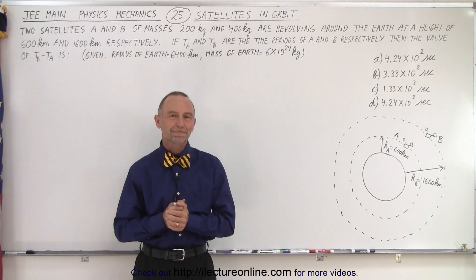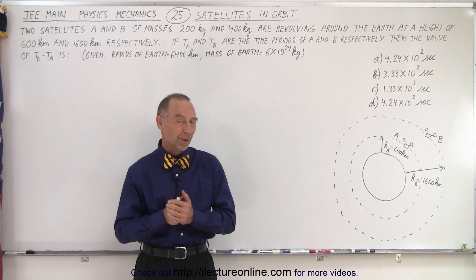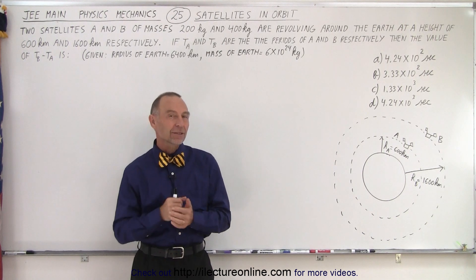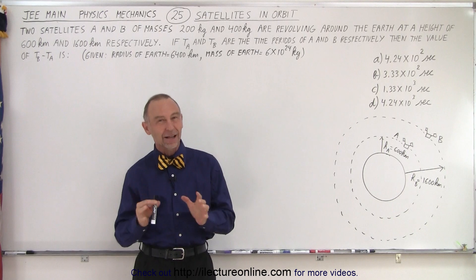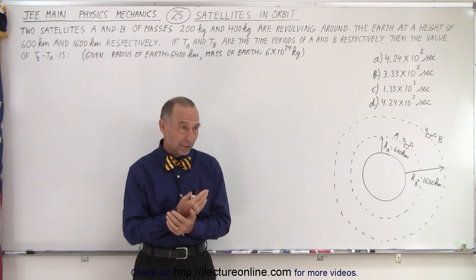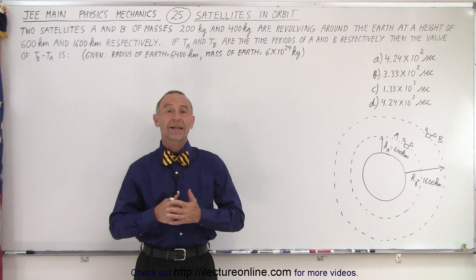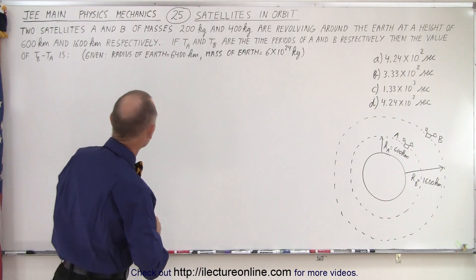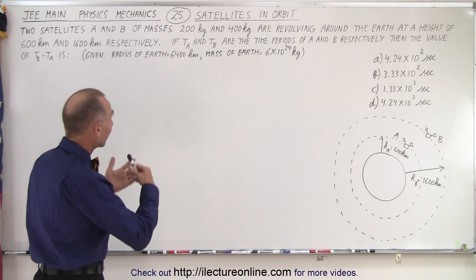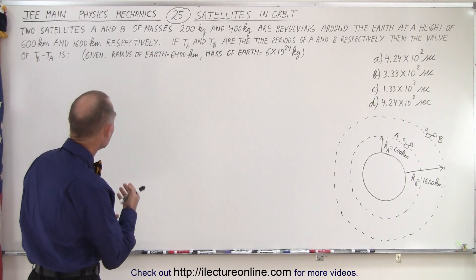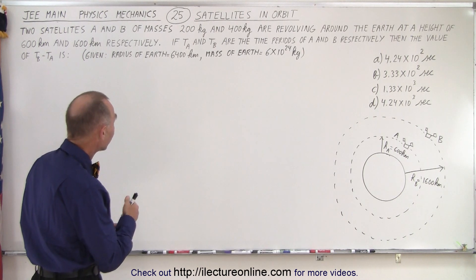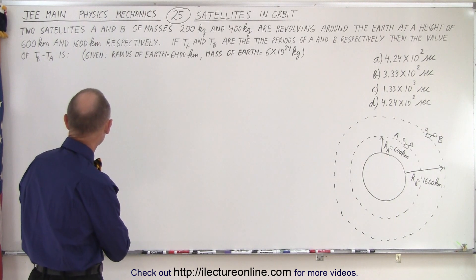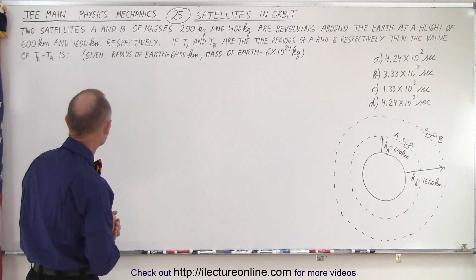Welcome to our lecture online. Here we have another interesting problem from the JEE main physics test, and this one in particular — remember they're not allowed to use calculators — and I'm looking at this problem wondering how you do this without a calculator. Well, we'll figure it out. Let's read the problem first. We're dealing with satellites in orbit: two satellites A and B of masses 200 and 400 kilograms revolving around the Earth at heights of 600 kilometers and 1600 kilometers respectively.